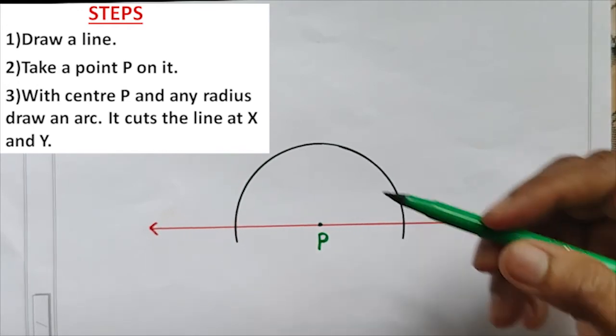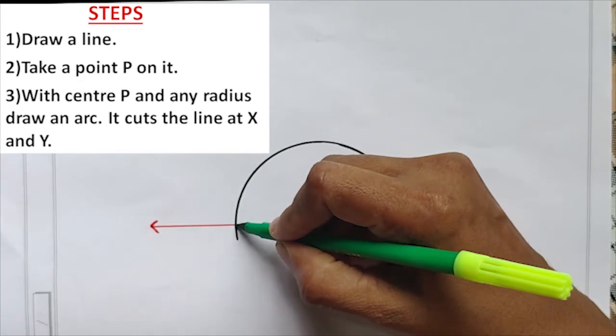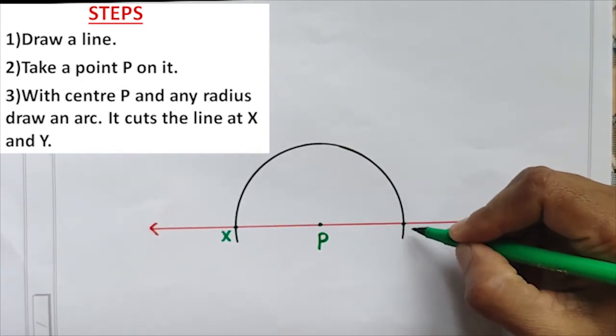It cuts two points on the line. The first point is X and the second point is Y.